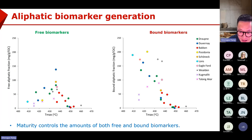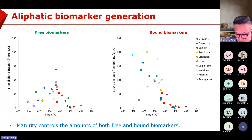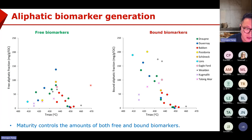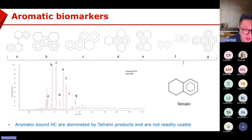I checked the aliphatic biomarkers at different thermal maturity stages. For free biomarkers, we extract the already-generated biomarkers. For bond biomarkers, they increase with increasing maturity and then decrease, something similar to oil generation. But bond biomarkers are very high at the immature stage. For marine shale, they are high at the immature stage, then the generation potential decreases with increasing maturity, similar to the hydrogen index, because they are converted to free biomarkers and released at higher maturity.